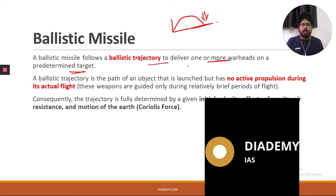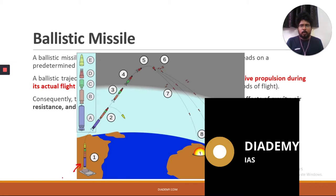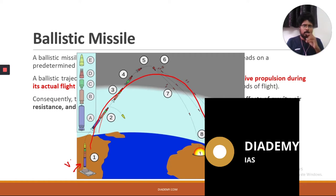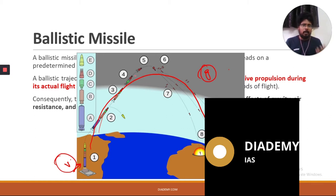If a missile is launched from one point and has to reach a target, we give it an initial velocity. With that initial velocity, the missile travels along a projectile path. The important thing for a ballistic missile is the initial velocity — after that initial velocity is given, gravity plays a major role.